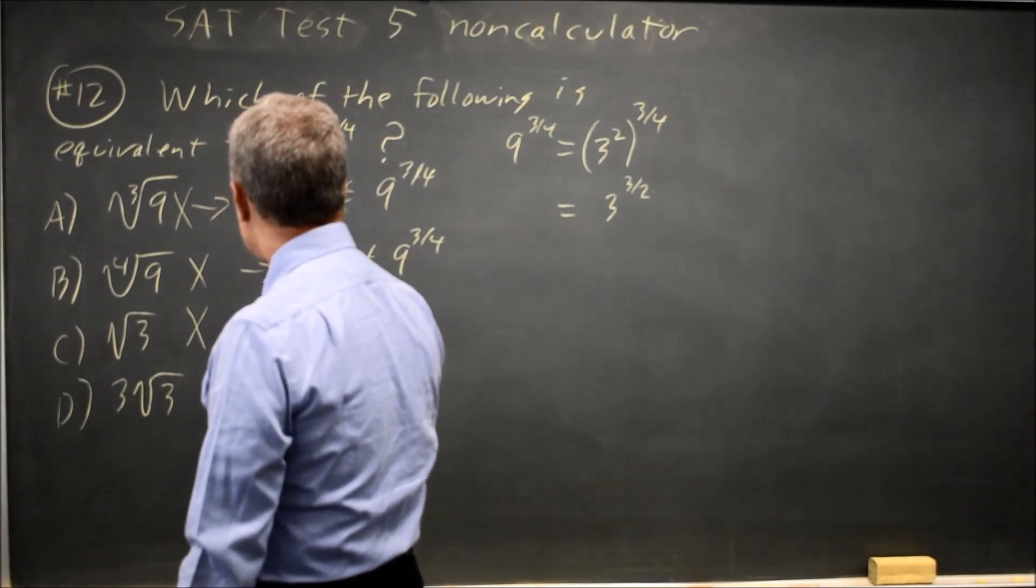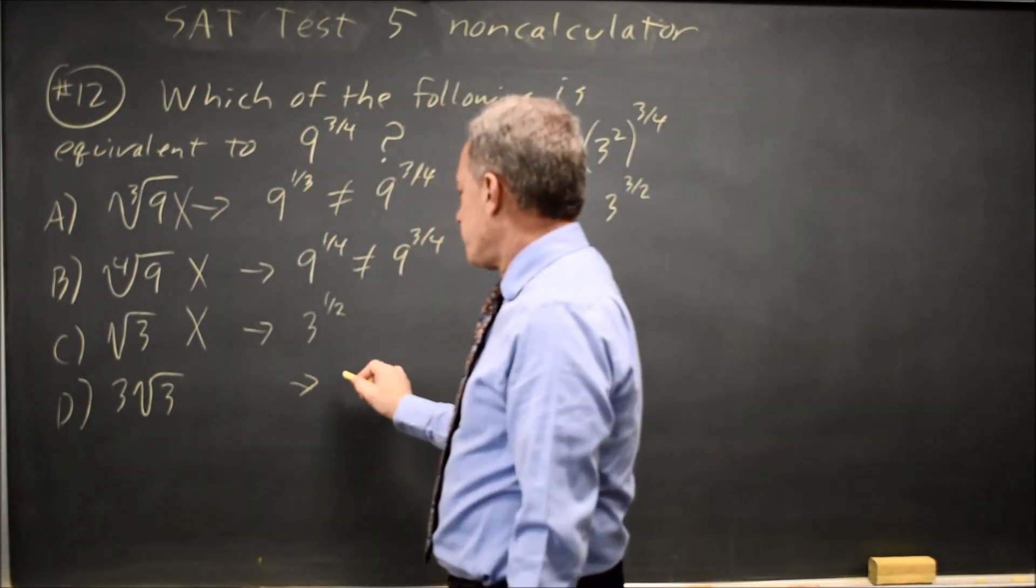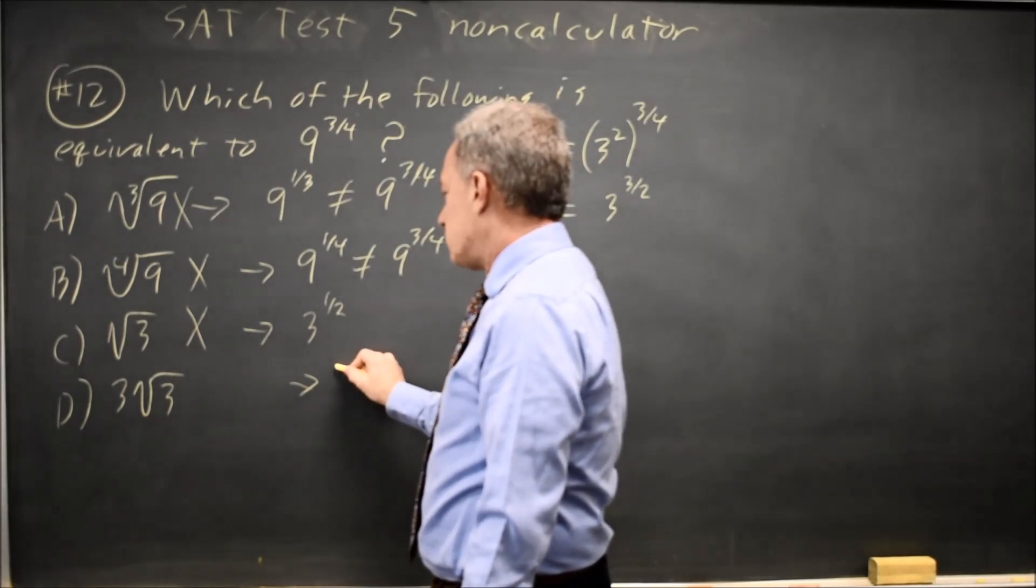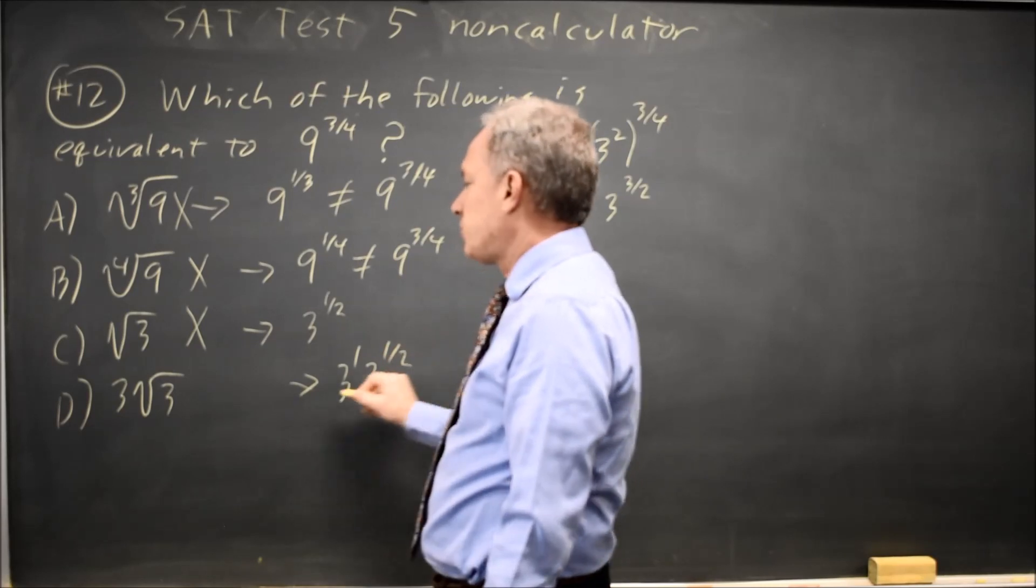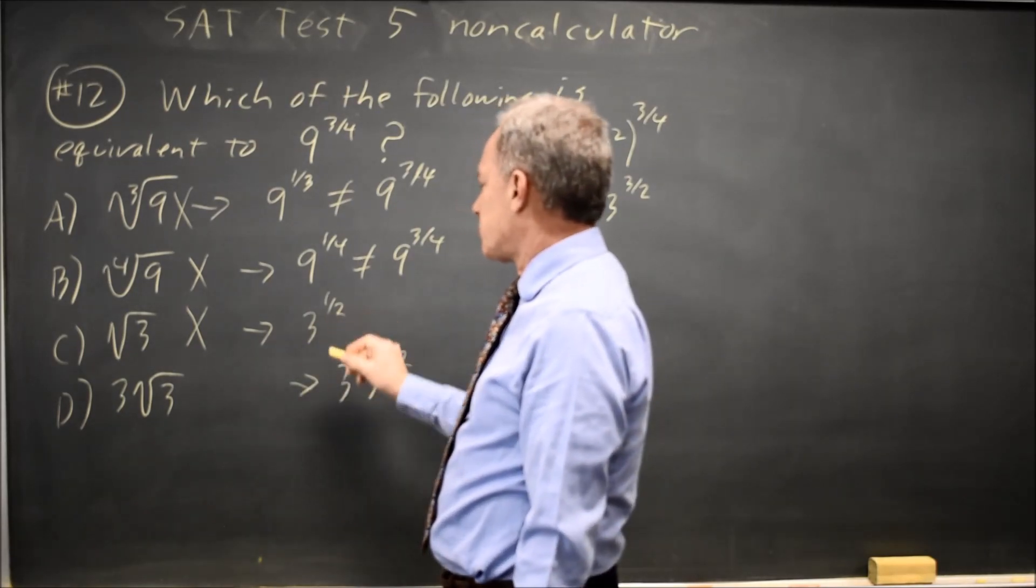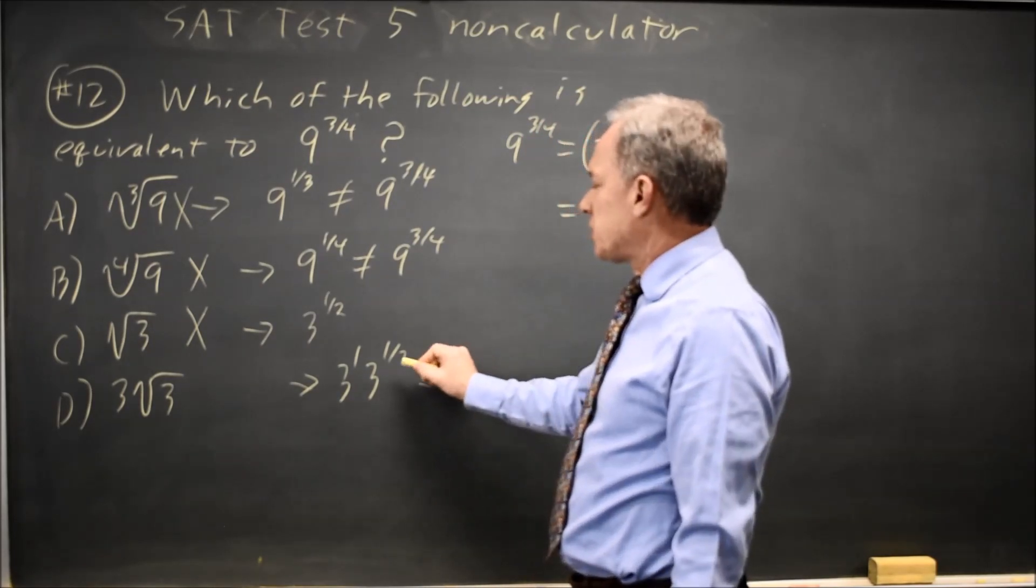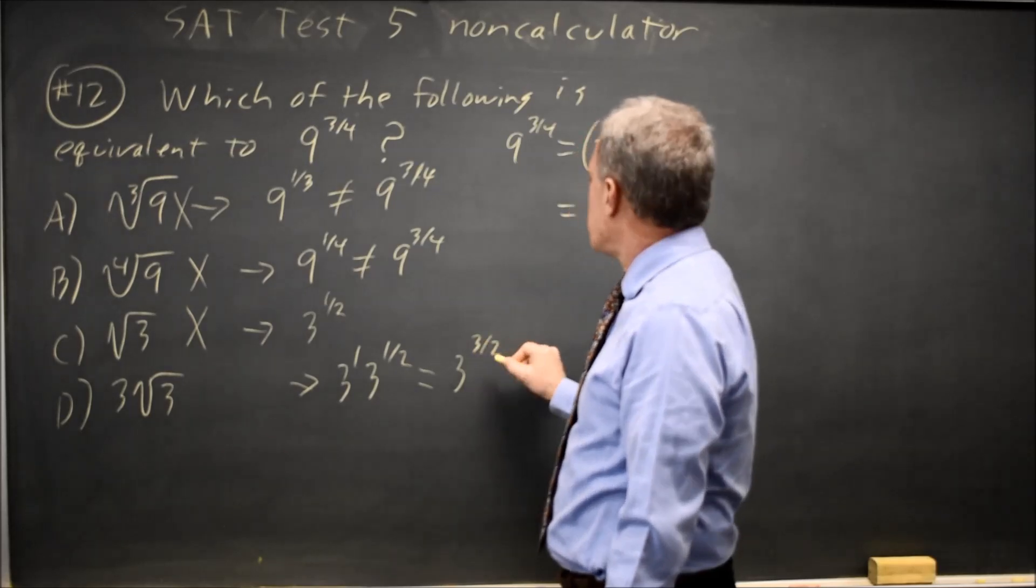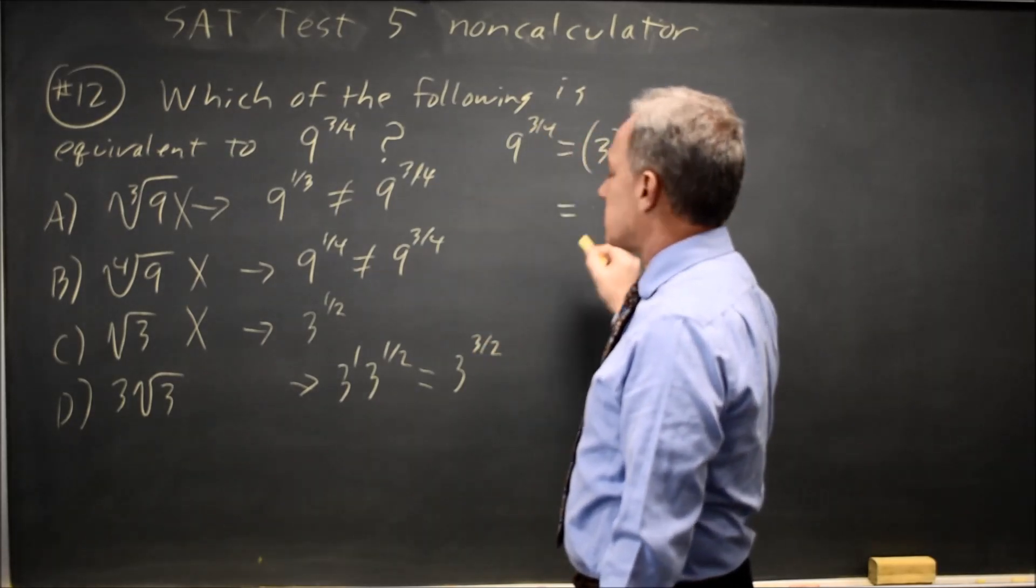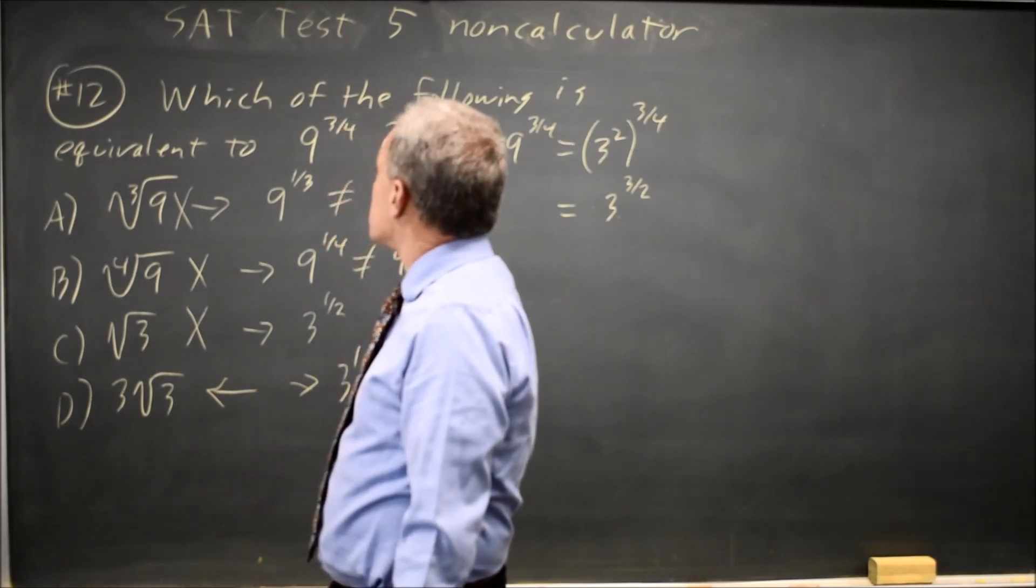So at this point I could conclude that D is the correct answer, but let's rewrite it anyways. Three root three is three to the one times three to the one-half. We've already said that root three is three to the one-half. If we have powers of the same base, we add exponents. So that's three to the two-halves plus one-half is three to the three-halves, and nine to the three-fourths is also three to the three-halves, so choice D is the correct answer.